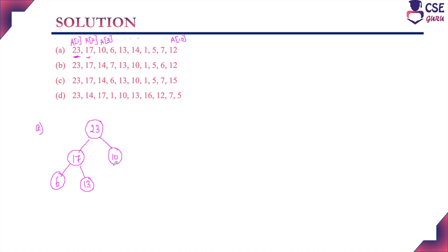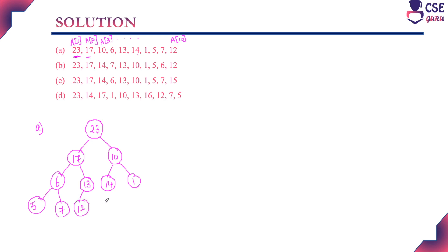Continuing option A: next are 14 and 1 as children of 10. We construct the complete binary tree level by level — level 1 has 1 node, level 2 has 2 nodes, level 3 has 4 nodes, level 4 has 8 nodes. The remaining nodes are 5, 7, and 12, placed accordingly. This completes the binary tree for option A.